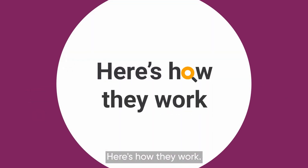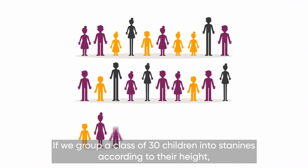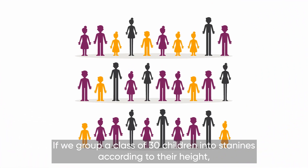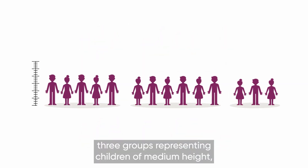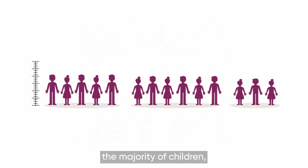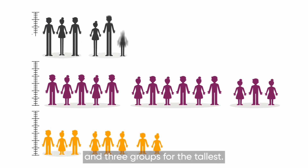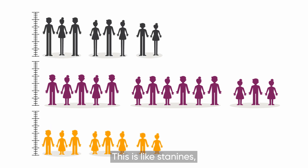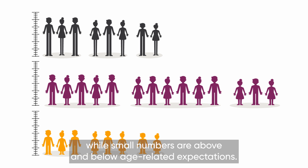Here's how they work. If we group a class of 30 children into STAN9s according to their height, we'd have three groups representing children of medium height — the majority of children — three groups for the shortest, and three groups for the tallest. This is like STAN9s, as the majority of children perform at age-related expectations, while small numbers are above and below age-related expectations.